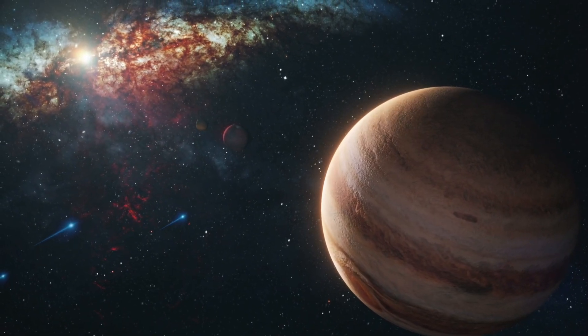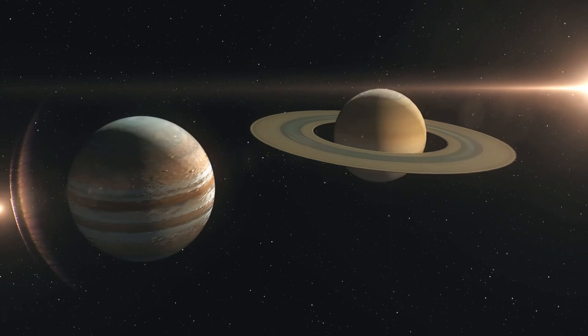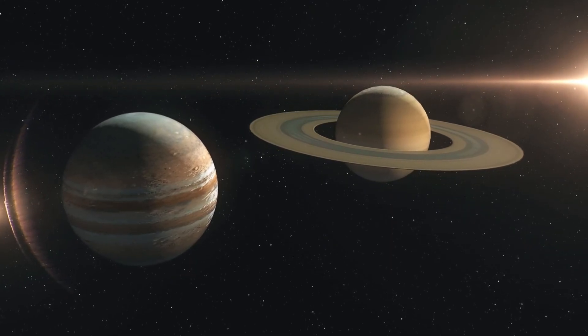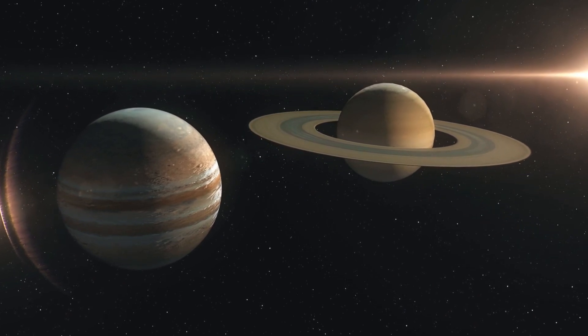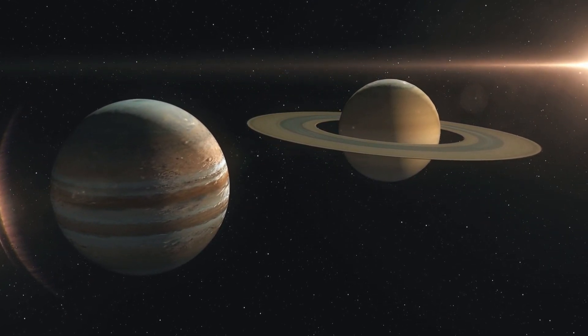Jupiter, the king of planets. Jupiter is the biggest planet. It has a giant red storm bigger than Earth and at least 79 moons.